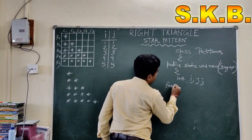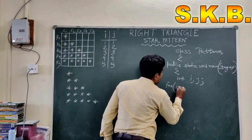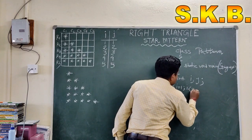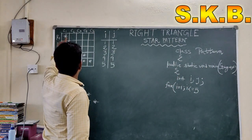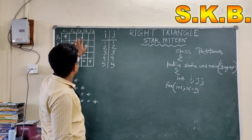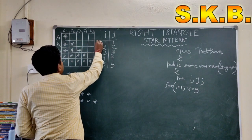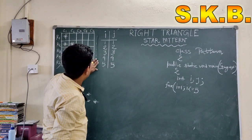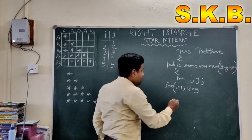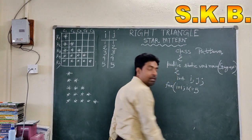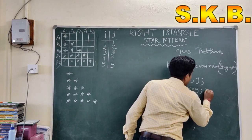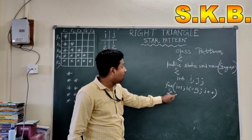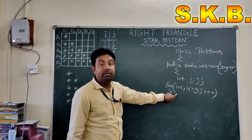For the outer loop: I is equal to 1, semicolon, I less than or equal to 5 — five rows are here: 1, 2, 3, 4, 5. And I plus plus. Second bracket open. Inside the outer loop we should implement the inner loop, mainly J.